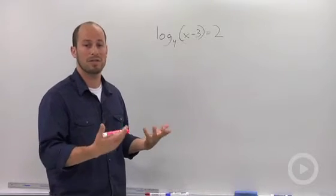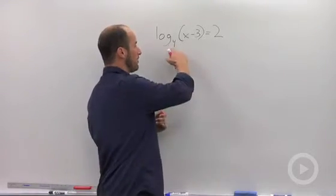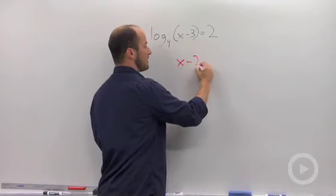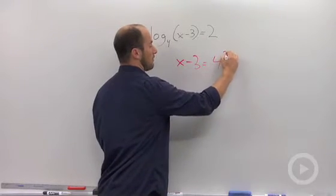To solve this out, all we want to do is put this into exponential form. So we bring the 4 up and around leaving us with x minus 3 is equal to 4 squared.